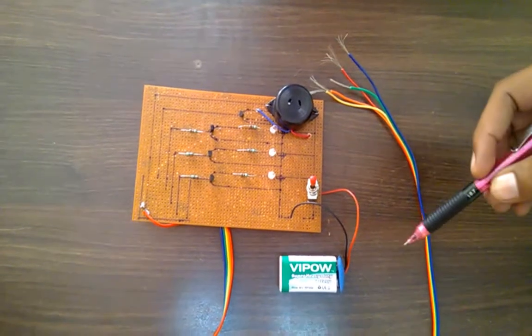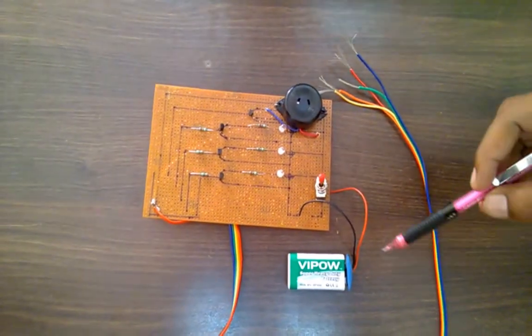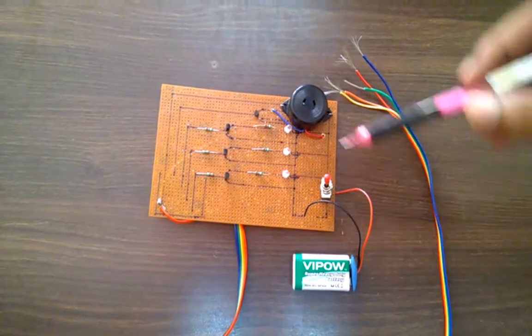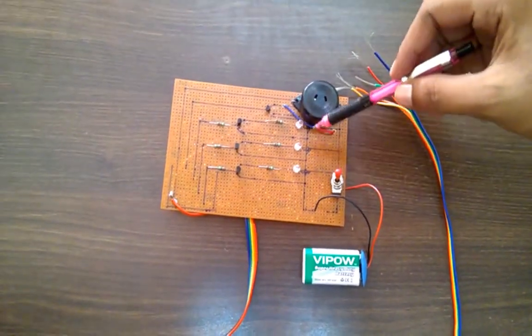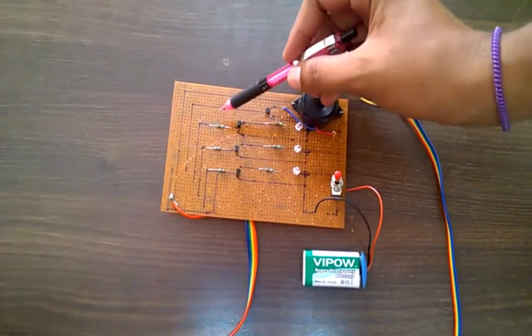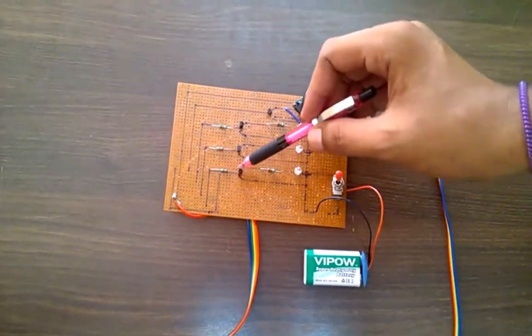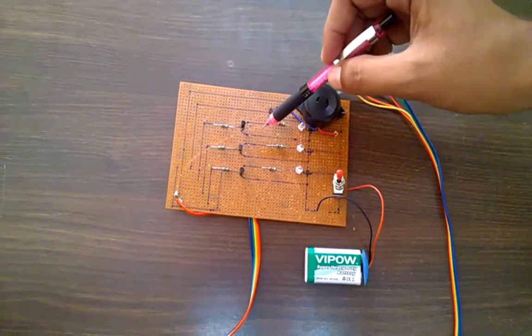As shown in the circuit of water level indicator, we have to use 9V DC battery, one switch, one buzzer, three LEDs, and six resistors. Four transistors are used in this circuit.